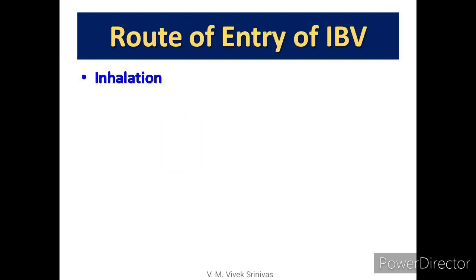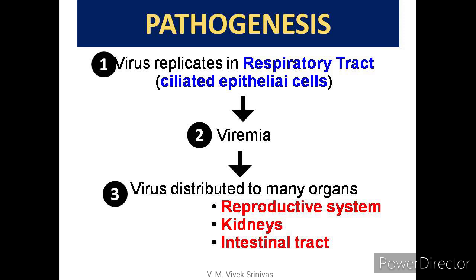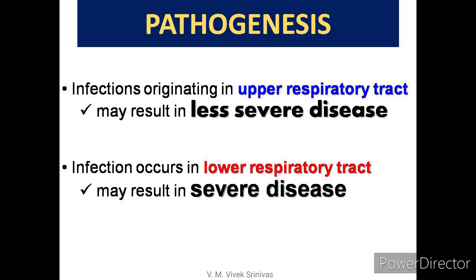Pathogenesis: The virus enters the host through inhalation, then replicates in the respiratory tract — specifically in the ciliated respiratory epithelial cells — followed by viremia. The virus is then distributed to various organs such as the reproductive system, kidney, and intestinal tract. Infections originating in the upper respiratory tract may be less severe, but infection in the lower respiratory tract increases severity.